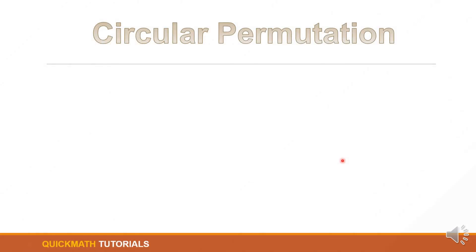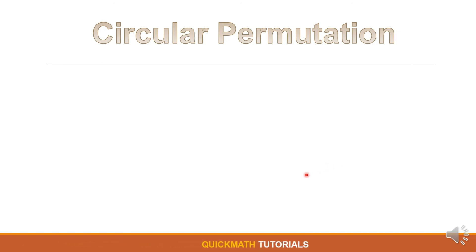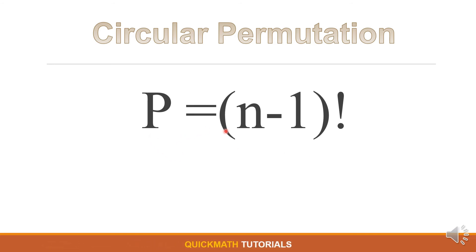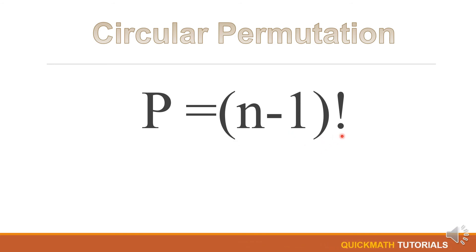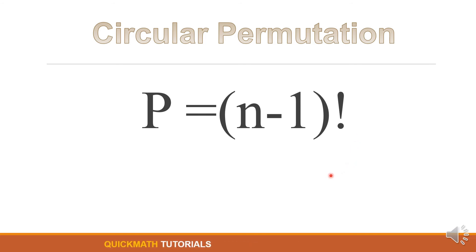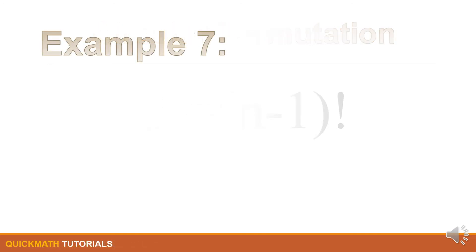For our last formula, we have the circular permutation. The formula is P equals (n minus 1) factorial. This formula is used if the given problem involves arranging the objects in a circular formation.